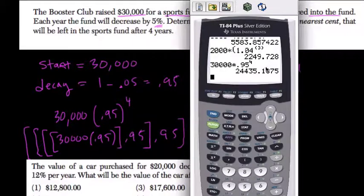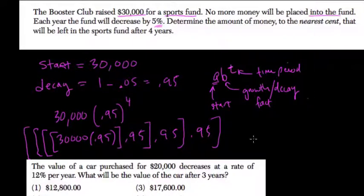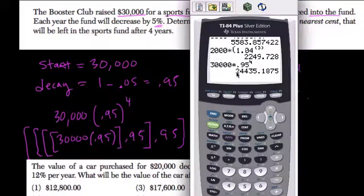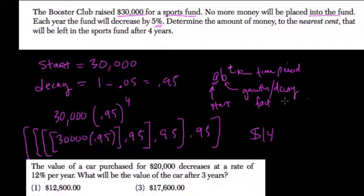To the nearest cent, it would be 19 cents, or 0.19 you round up. So we would have, if we were writing this in dollars, 24,435.